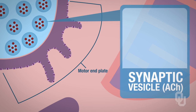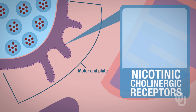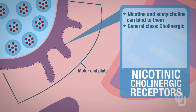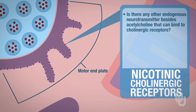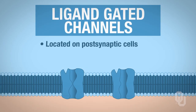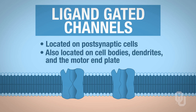On the motor end plate we have nicotinic cholinergic receptors. These are called nicotinic because both nicotine and acetylcholine can bind to them. The general class of receptor here is called a cholinergic receptor. Since ligands bind to them, they are called ligand-gated channels. No other endogenous neurotransmitter besides acetylcholine can bind to cholinergic receptors. Ligand-gated channels are located on postsynaptic cells — on cell bodies, dendrites, and now on the motor end plate.